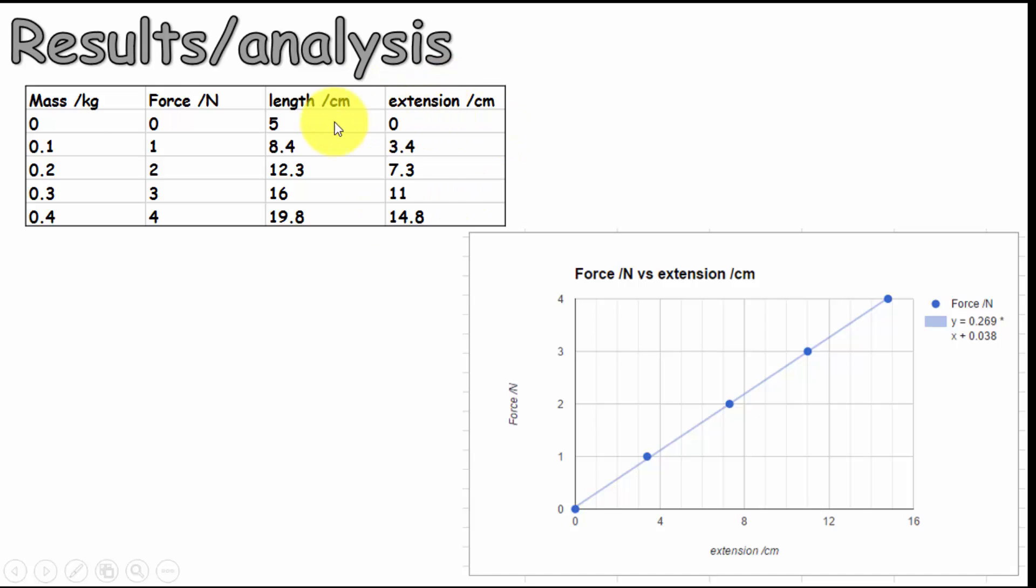And then I went ahead and plotted the force against the extension to produce this graph. The idea was that we could use the graph and your results to measure the weight or mass of an unknown object. The unknown object I had produced a length of 12.5 centimeters, which was an extension of 7.5 centimeters. So I could just read straight off the graph and get a number of approximately 2.1. Or I could go ahead and use the equation that the spreadsheet produced for this line.